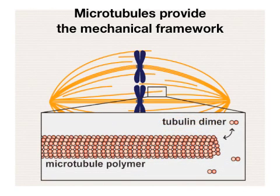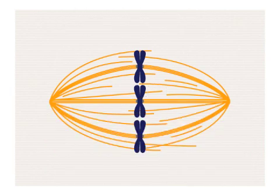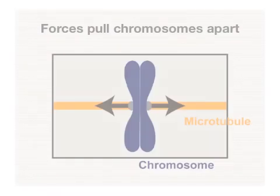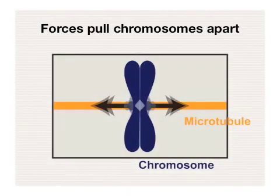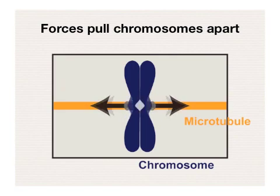Microtubules, which are polymers of the protein tubulin, provide the mechanical framework for this purpose. The metaphase spindle is also subjected to many different forces. For example, microtubules pull chromosomes apart, which results in an equal and opposite force that acts on the spindle.